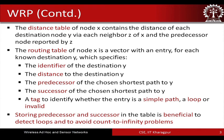The predecessor and successor information stored in the table is beneficial for detecting loops and avoiding the count-to-infinity problem. The count-to-infinity problem arises specifically with distance vector routing, and I am assuming you have basic knowledge of routing in the internet where this problem occurs, so I will not elaborate further.